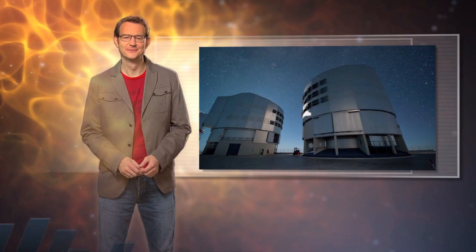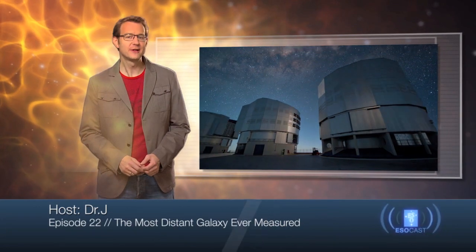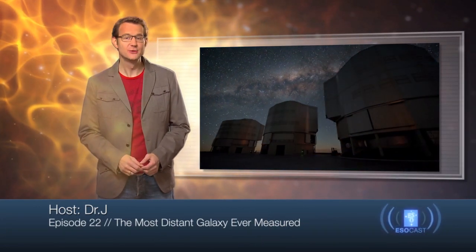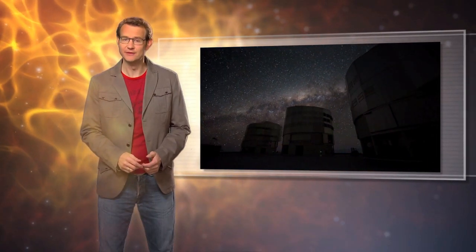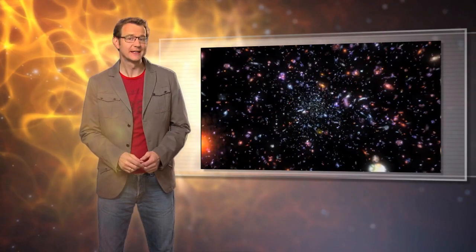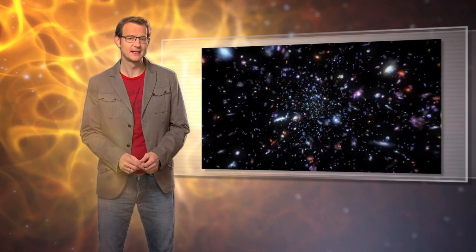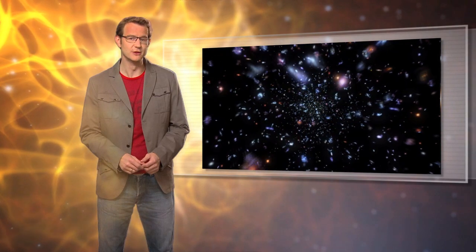Hello and welcome to the ESOcast. In this episode, we're going to find out how a team of astronomers used ESO's Very Large Telescope, the VLT, to confirm that a galaxy previously spotted in images from the NASA-ESA Hubble Space Telescope is in fact the most distant object that has ever been identified in the Universe.